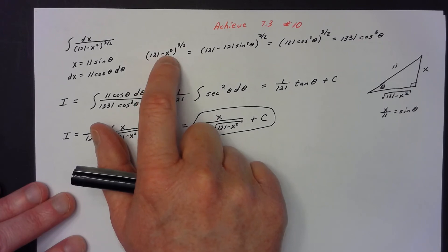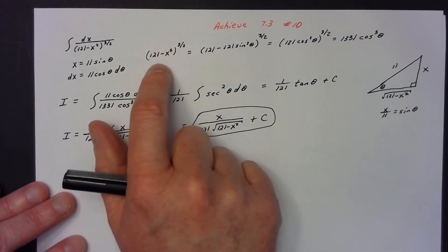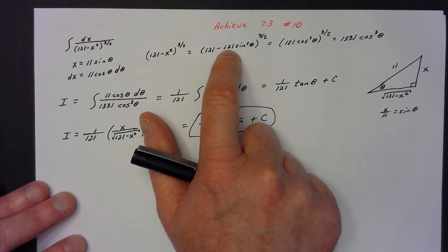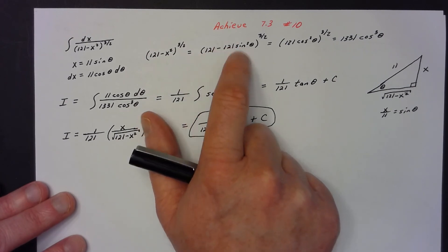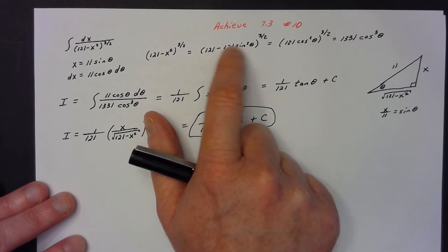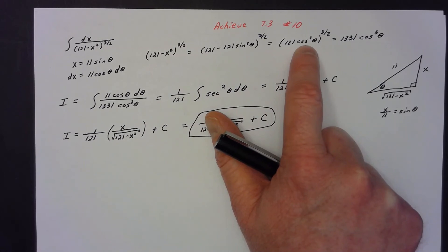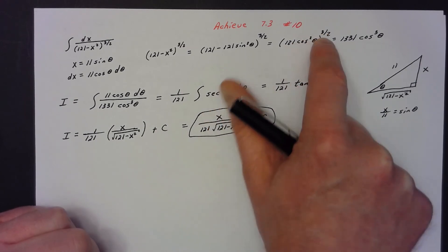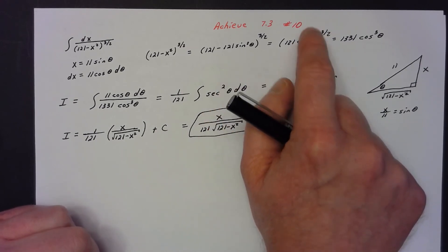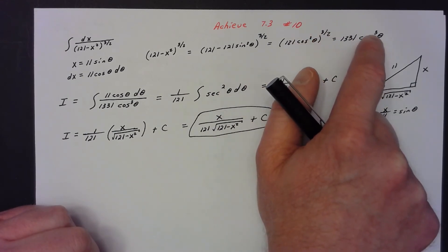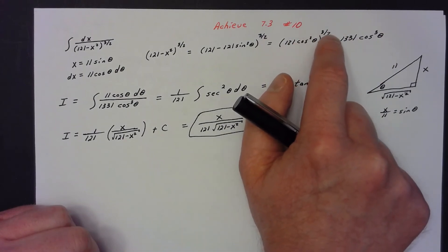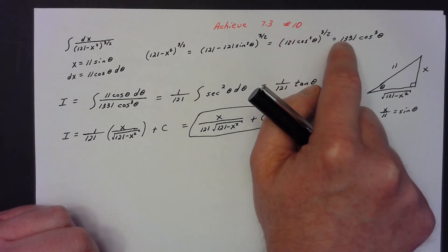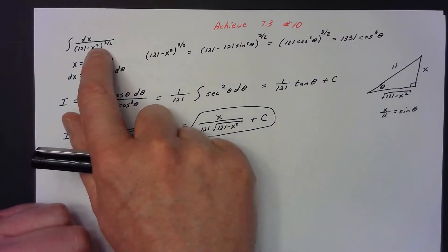Think about what (121 − x²)^(3/2) equals once you plug in 11 sin θ for x. That's (121 − 121 sin² θ)^(3/2). Factor out 121 inside that group to get 121(1 − sin² θ), which is 121 cos² θ. Raising that to the 3/2 power: cos² to the 3/2 gives cos³ θ, and 121^(3/2) = 11³ = 1331. So the denominator is 1331 cos³ θ.